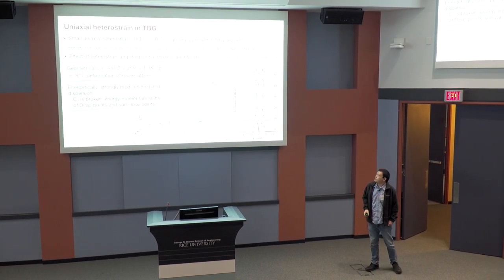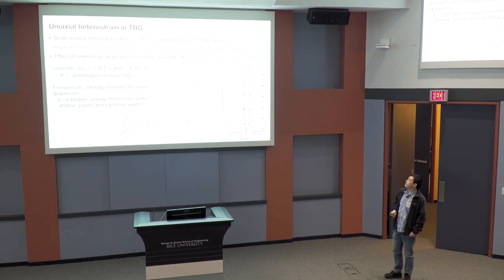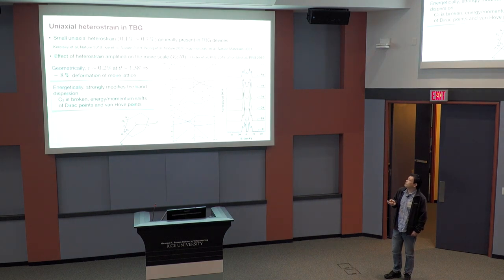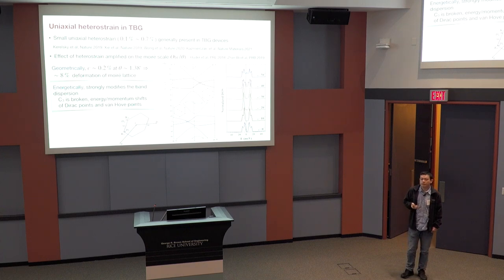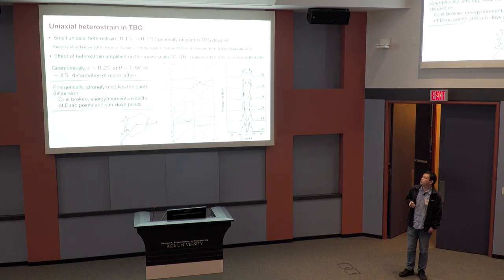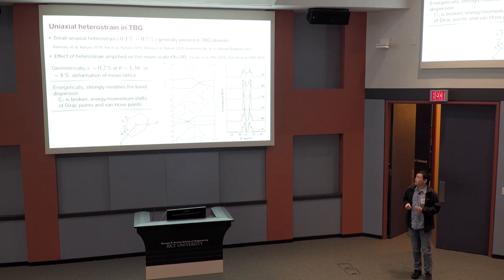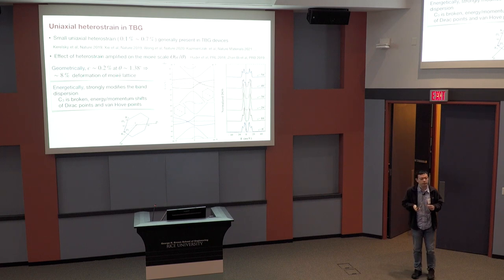So, since the early days, heterostrain has been discussed in the literature by various experimental groups, which here I list the field. So typically, from STM measurements, or atomic force microscopy measurements, they can tell that there's a small amount of uniaxial strain corresponding to about 0.1% to up to 0.7%. However, the thing is that despite such a small deformation on the atomic scale, it gets enhanced because the moiré scale contains on the order of 10,000 atoms.